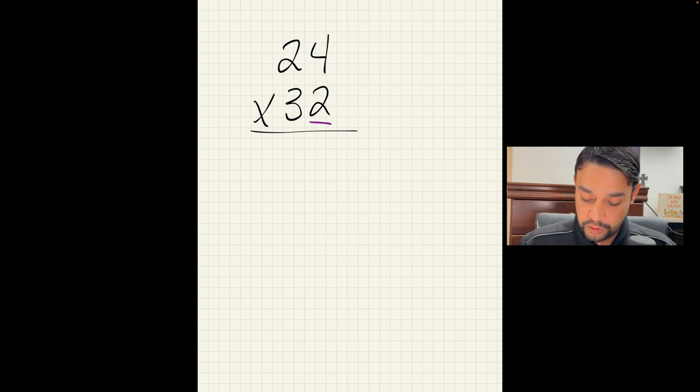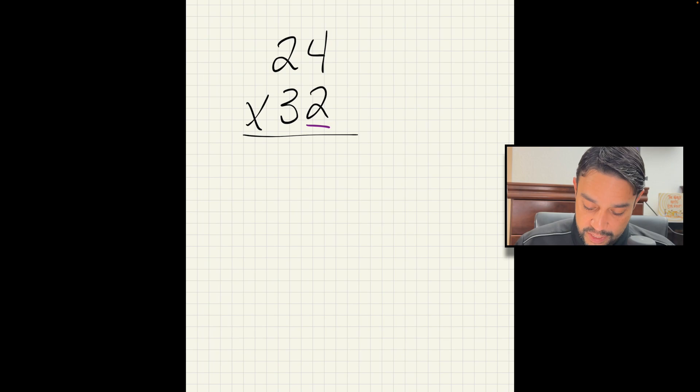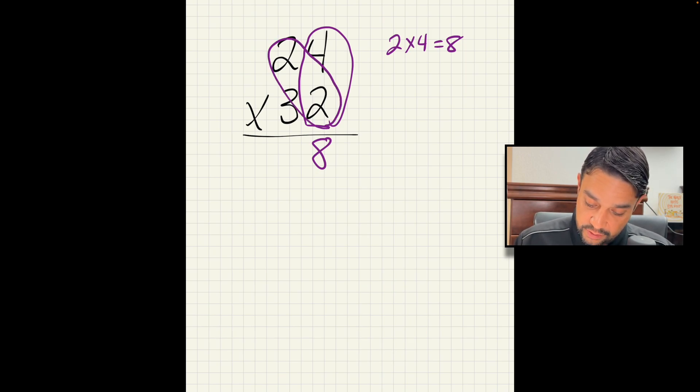That's our 2. So we're going to start in the ones place. 2 times 4, 8. So our answer goes in the ones place, 8. Our next one is 2 times 2. We went from the ones to the ones, now from the ones to the tens. Easy peasy. That's 4. Since we did the tens, our answer is going to go in the tens.